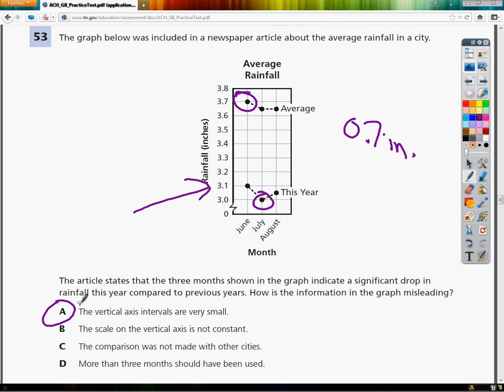B says the scale on the vertical axis is not constant, which is to say it goes up by random things. But it doesn't. It goes up 0.1 every time. 3.0 to 3.1 to 3.2, 3.3. So B is not a good reason that it doesn't work.